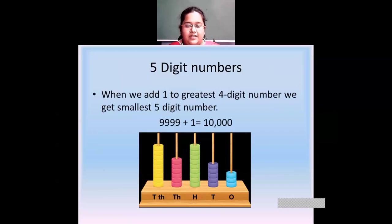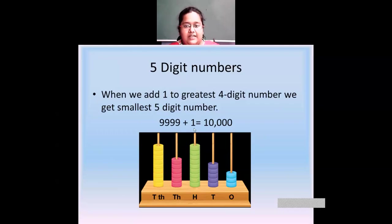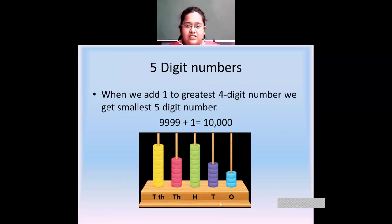Now, what are five digit numbers? When we add one to the greatest four digit number — which is 9,999 — we get the smallest five digit number, which is ten thousand. In four digit numbers we had ones, tens, hundreds, and thousands. In five digit numbers we will have ones, tens, hundreds, thousands, and ten thousands. We read that place as ten thousands.